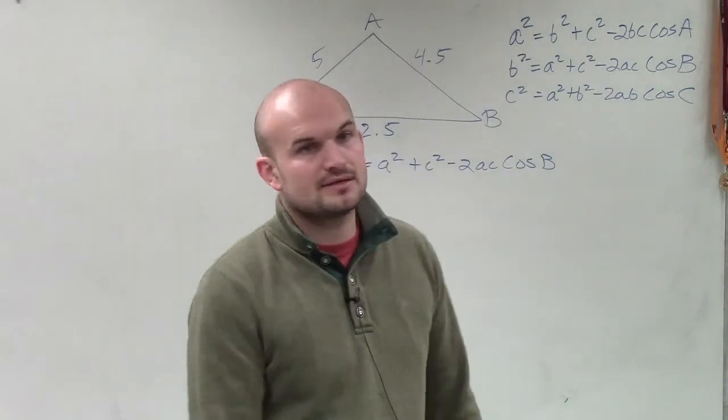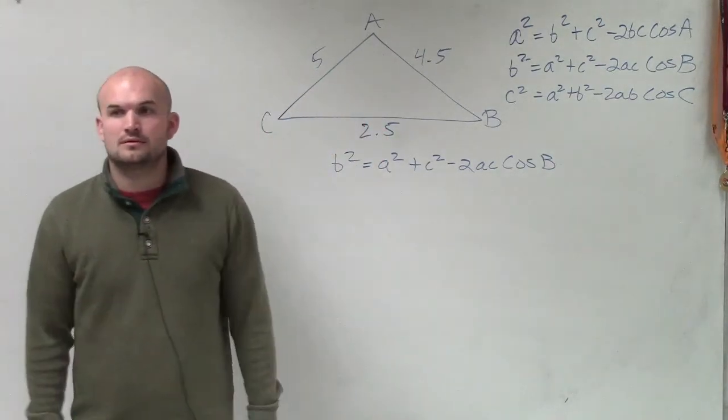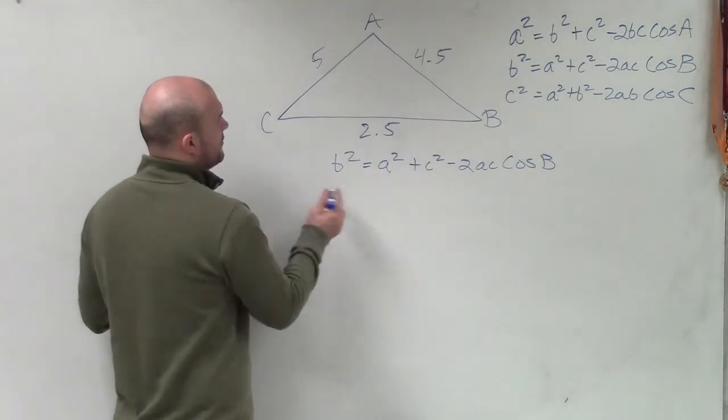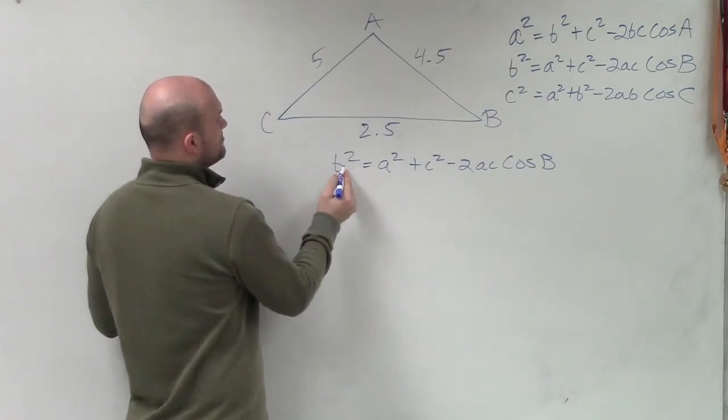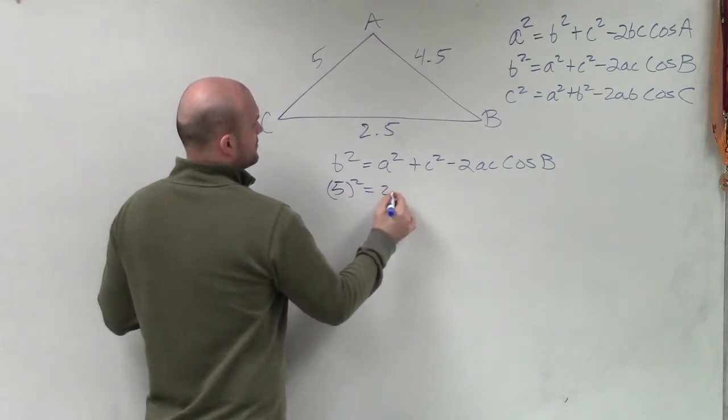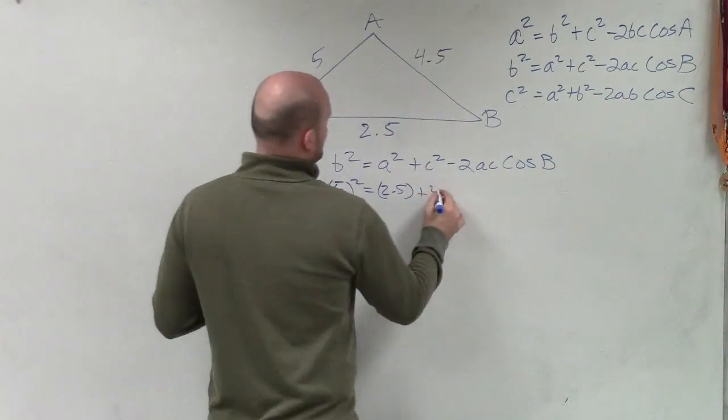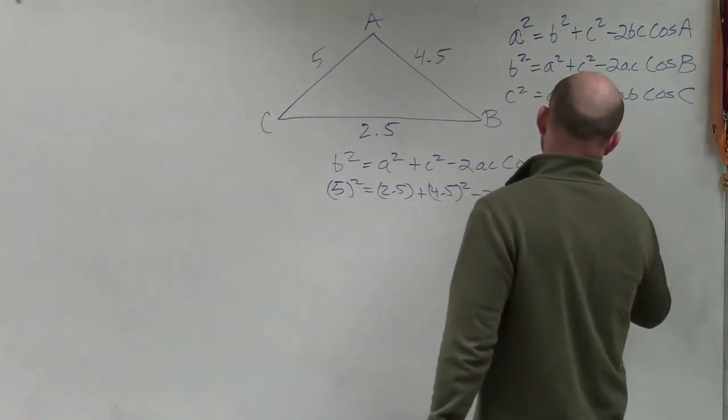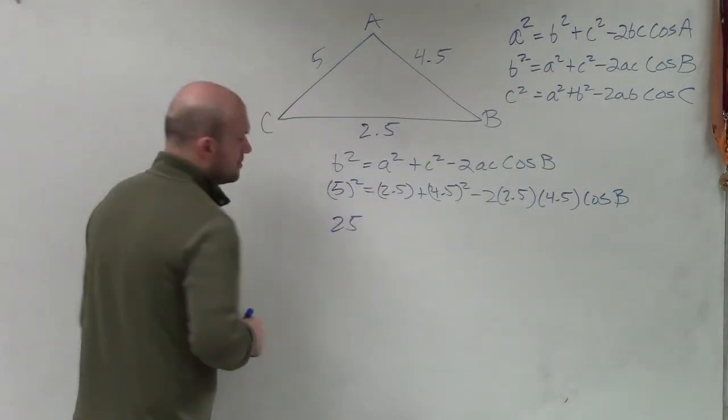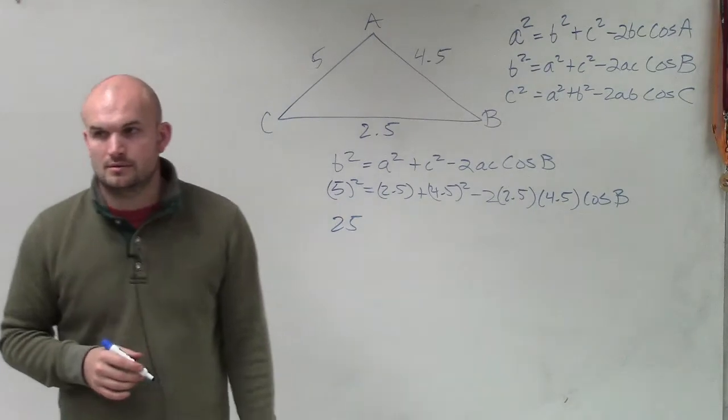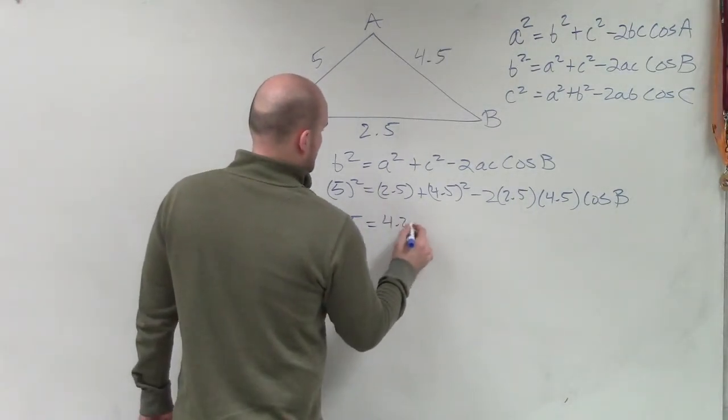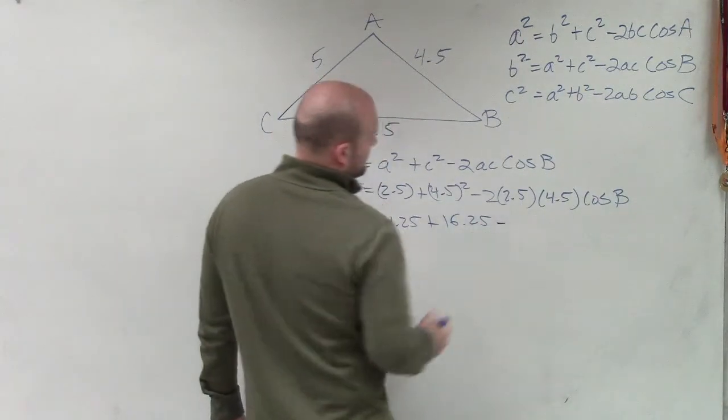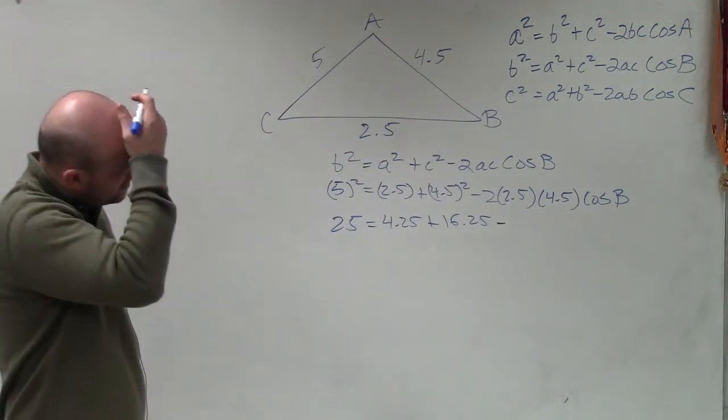So now, in this case, you put the angle across from the bigger side. Correct. We'll see why in this case. Therefore, we have b². So we know that's going to be 5² = a² + c² - 2 × 2.5 × 4.5 times the cosine of b. That's going to be 16.5, 20.5.